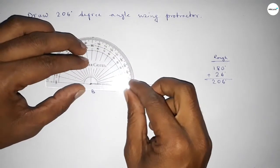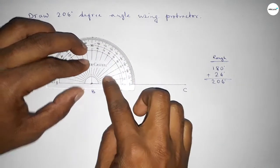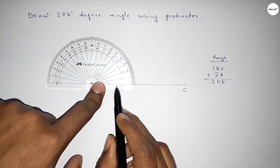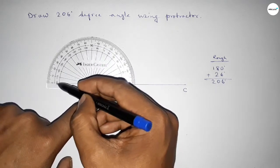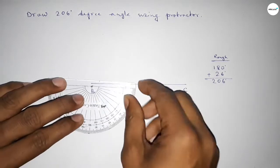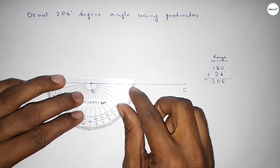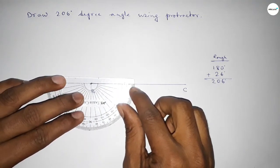First, we count 180 degrees by putting the protractor on point B and measuring the angle. This gives us 180 degrees. Then, we put the protractor on point B again this way and count 26 degrees.